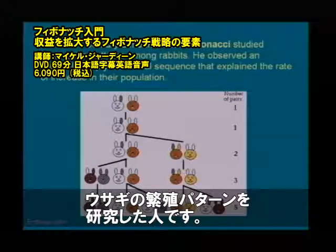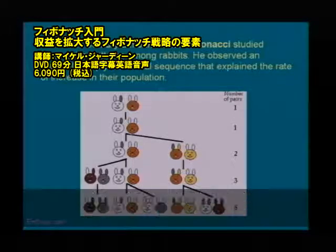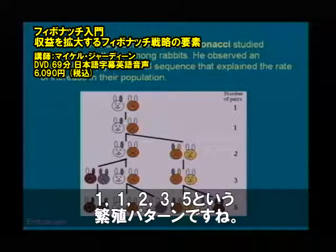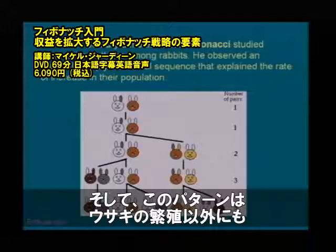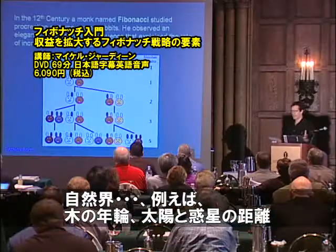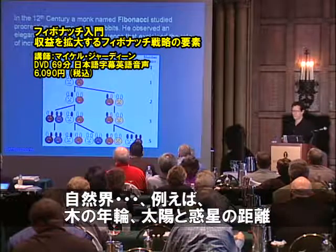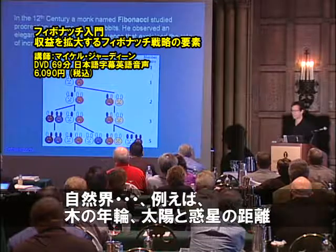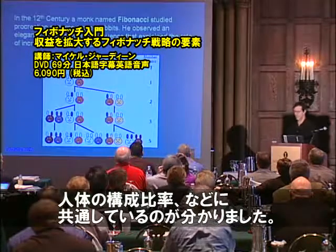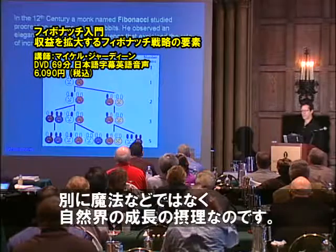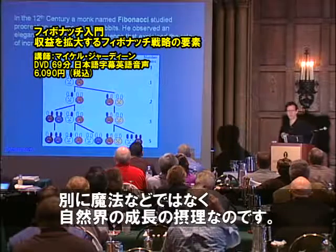He observed an elegantly simple sequence that explained the rate of increase of their population: 1, 1, 2, 3, 5. And it not only explains the rate of increase of rabbits, but also growth patterns that appear commonly throughout nature — everything from the rings of a tree to the distance of the planets from the sun to the proportions of your body, your hand to your arm. And it's not hocus-pocus; it just happens to be a natural growth pattern in nature.